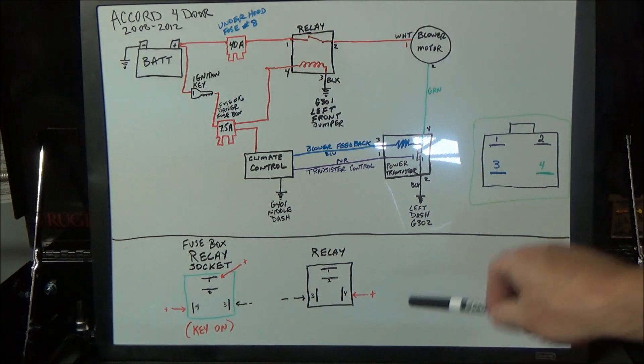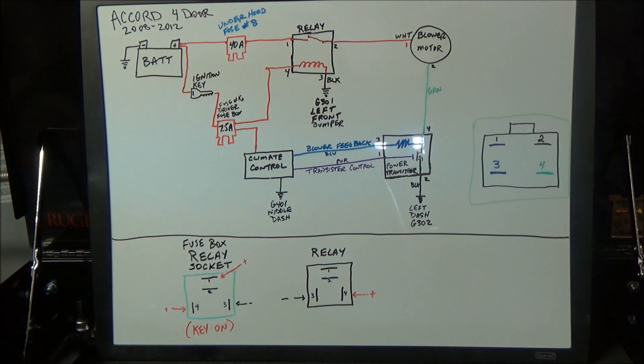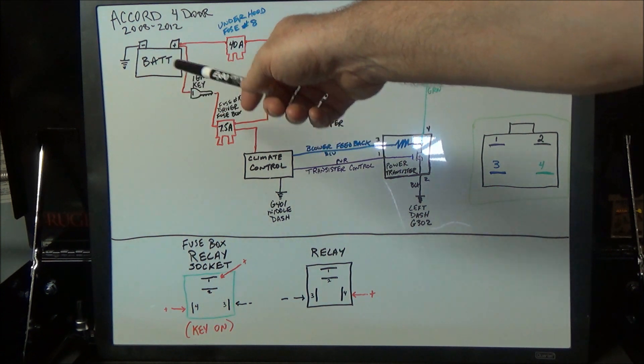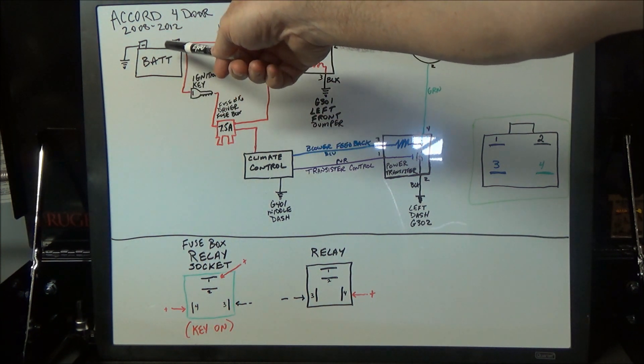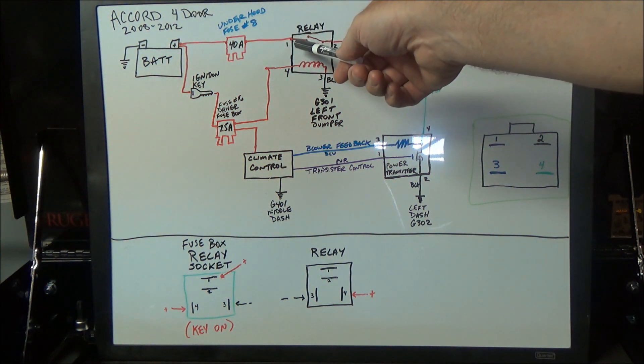It helps to know the layout of the circuit you're working on. This is the blower motor circuit on a 2012 Honda Accord. You've got battery positive going through a 40-amp fuse to pin number one on that blower motor relay. You can see it's open—there's a switch in there—and then it continues on to the blower motor.